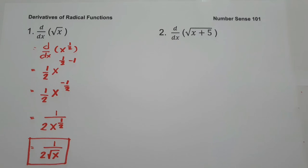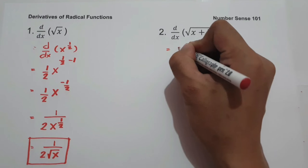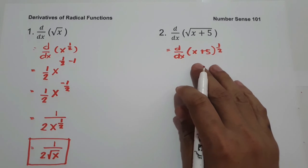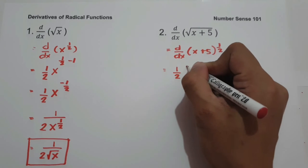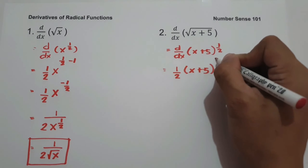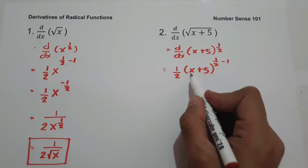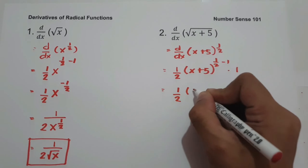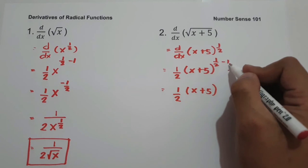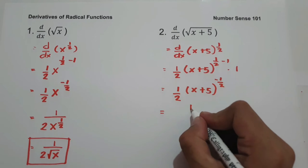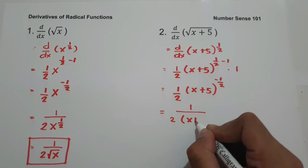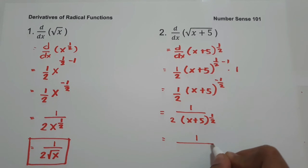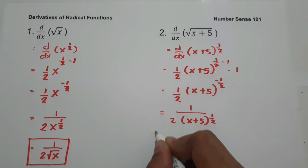On number 2, what is the derivative of square root of x plus 5? So let us rewrite this one as the derivative of x plus 5 raised to 1 half. Since we have a chain rule, let us have 1 half times x plus 5 raised to 1 half minus 1, that is negative 1 half. Then let us find the derivative of the inside, that is x plus 5, and that is 1. So we have 1 half, and the final answer is 1 over 2 square root of x plus 5.